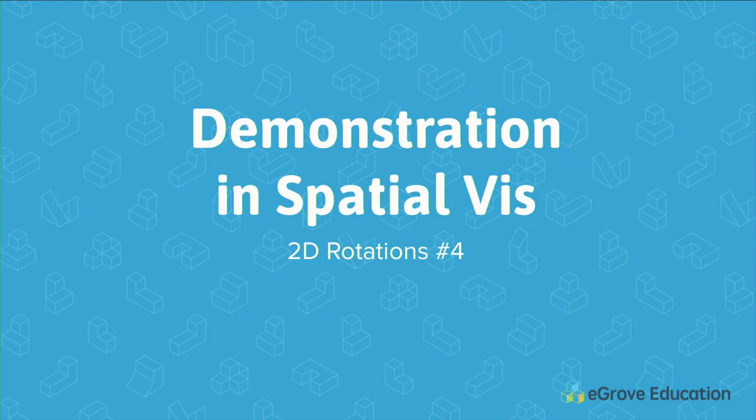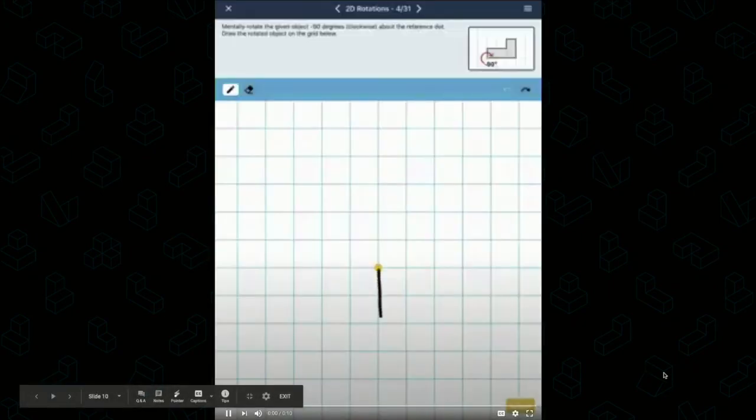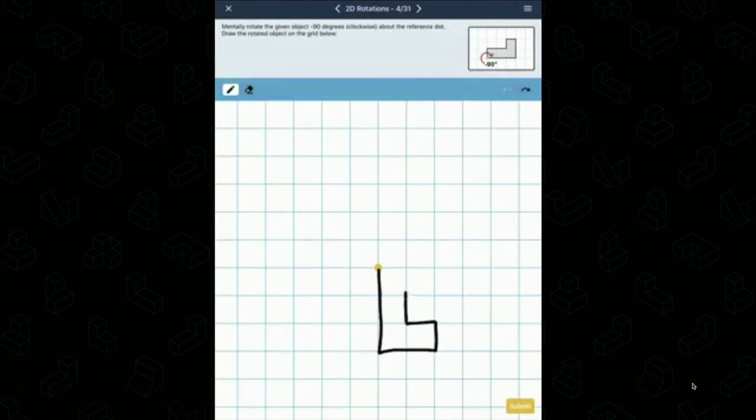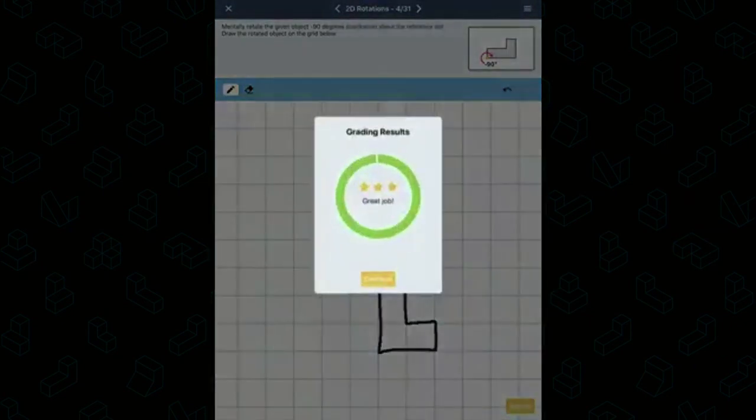Let's look at one example in the app. This is 2D rotations number four. When we look at the video, we can see that we want to rotate this object negative 90 degrees. And there we go.